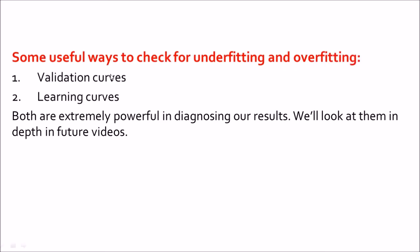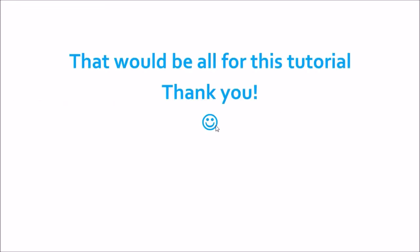There are useful curves for checking underfitting and overfitting called validation curves and learning curves — both are extremely powerful in diagnosing results and will be covered in depth in future videos. I hope I was clear in explaining what bias and variance are, how they can badly affect our model, and how we can minimize their effects using boosting, bagging, regularization, and so on. That is all for this lecture — thank you for watching.